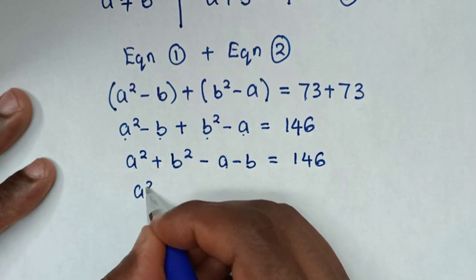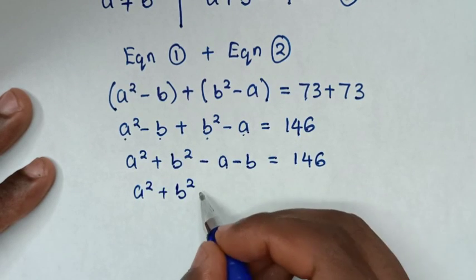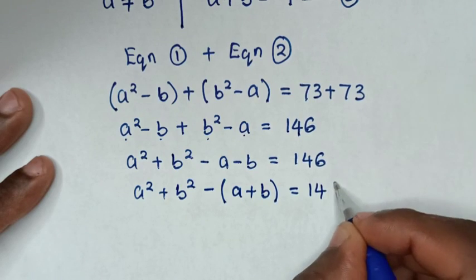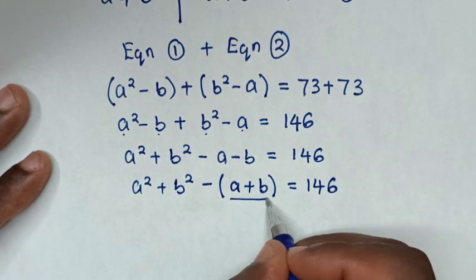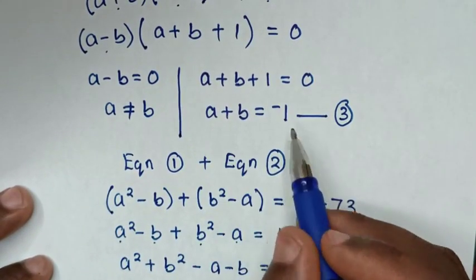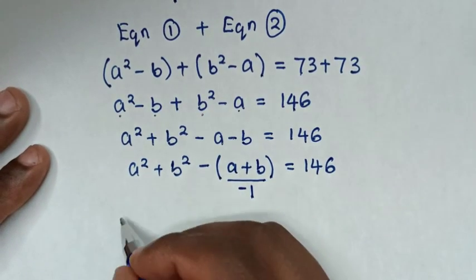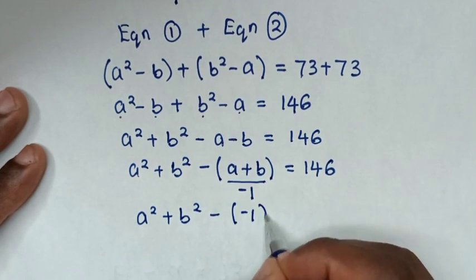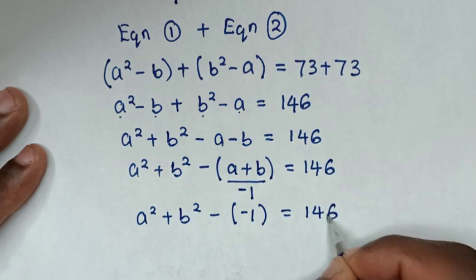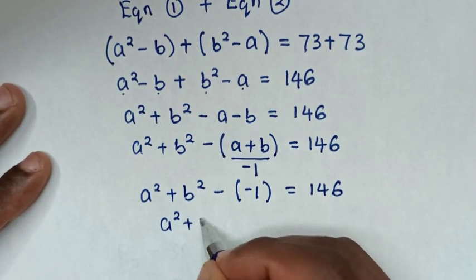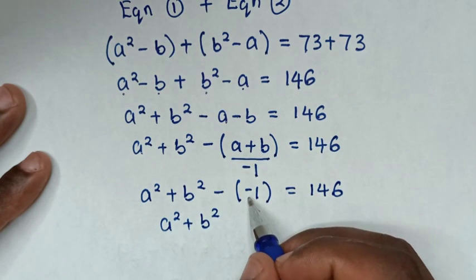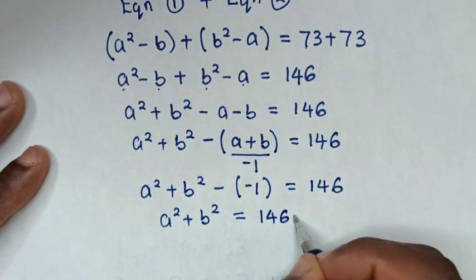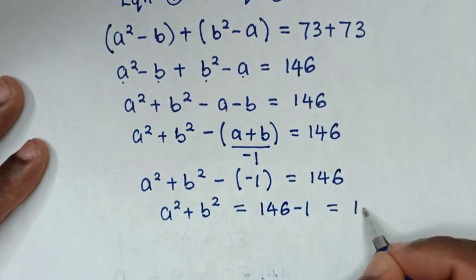Our equation is A squared plus B squared, with negative common, so we take negative out of the bracket: A squared plus B squared minus bracket A plus B bracket equals 146. Then substituting equation 3, A plus B equals negative 1, we get A squared plus B squared minus bracket negative 1 bracket equals 146. So A squared plus B squared minus negative 1 equals 146, giving A squared plus B squared plus 1 equals 146, which means A squared plus B squared equals 145.